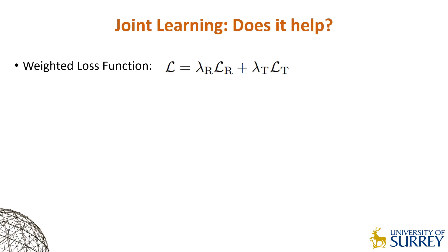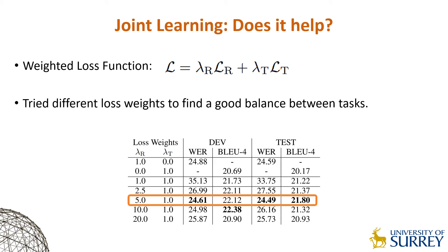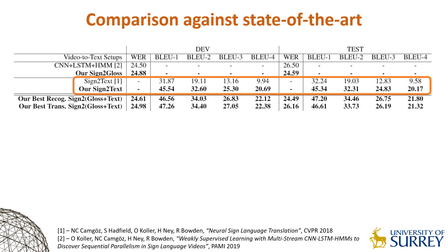We conduct experiments to find a good balance between the CTC-based recognition loss and the word-level cross-entropy translation loss. In our experiments, weighting the recognition loss with a scale of 5 gave the best overall performance, which compensates for the scale differences between losses. Furthermore, training our models jointly on both tasks improves their performance. We believe this is due to losses regularizing one another, while recognition also aids the encoder for translation. Our approach achieves state-of-the-art performance in both video-to-text recognition and translation. In the sign-to-text setup, we double our previous translation accuracy. We also report improved translation performance over the previous RNN-based attention models on text-to-text translation setups.